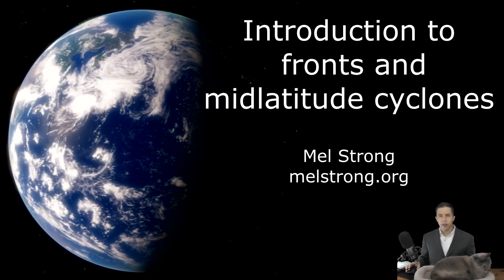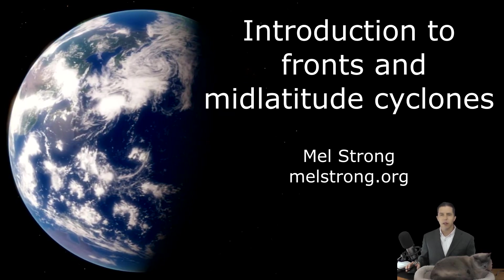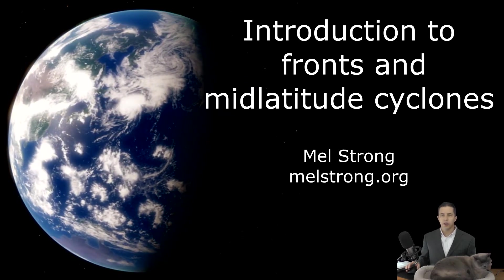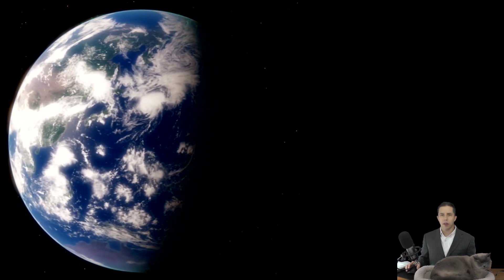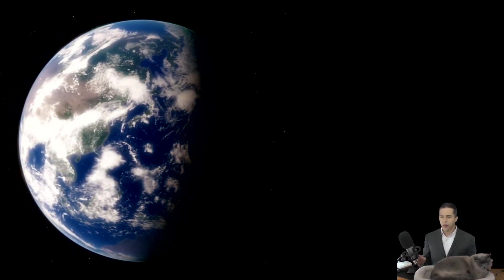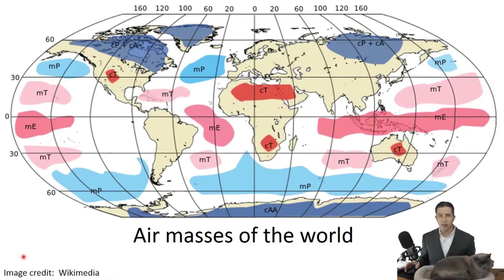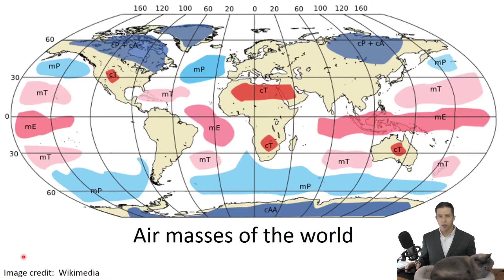Hey, this is Mel Strong and this lecture is on fronts and mid-latitude cyclones. In previous lectures we've been talking about how we can create clouds and precipitation through convection. In that story, a parcel of air is warmer than its environment, so it rises, expands, cools, and eventually reaches its dew point and forms a cloud. If it keeps going, eventually you can get precipitation.